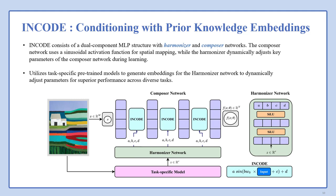ENCODE primarily consists of a dual-component MLP structure with harmonizer and composer networks. The composer network uses a sinusoidal activation function for spatial mapping. For example, for an image, it maps x and y coordinates to corresponding RGB values. While the harmonizer network attempts to dynamically adjust key parameters of the composer network activation function during the learning process.